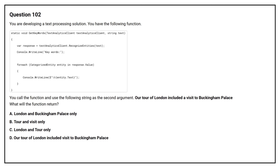Question number 102. You are developing a text processing solution. You have a function and you call the function using the following string as the second argument: 'Our tour of London included a visit to Buckingham Palace.' What will the function return?